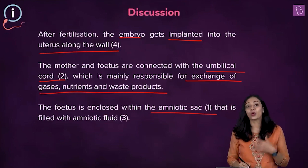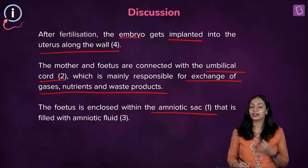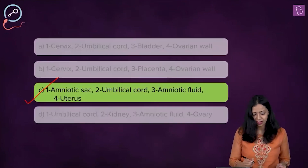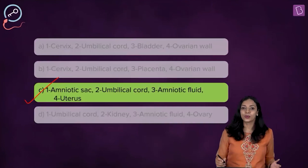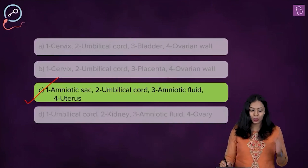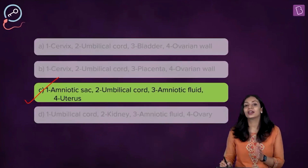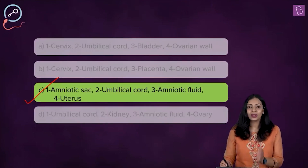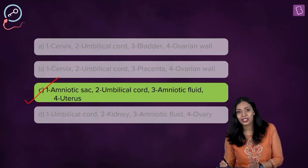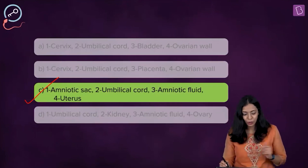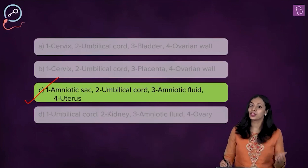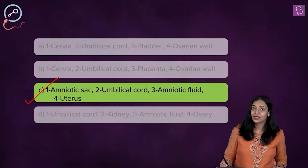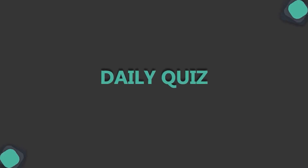Now that we know what the different labels represent, the correct answer is option C: one represents the amniotic sac, two represents the umbilical cord, three represents the amniotic fluid, and four represents the uterine wall. The correct answer to this question is option C.